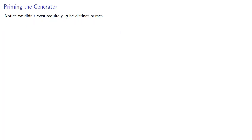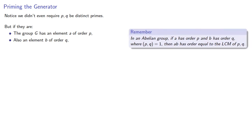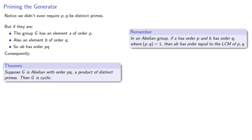But wait — we can go further. Notice we didn't even require that p and q be distinct primes. But if they are, then we know that G has an element a of order p and an element b of order q. And in an abelian group, if a has order p and b has order q, where the greatest common divisor of p and q is 1, then ab has order equal to the least common multiple of p and q. So if p and q are distinct primes, then their GCD is 1 and their LCM is the product, so ab will have order pq. Consequently, if G is abelian with order pq, a product of distinct primes, then G is cyclic.